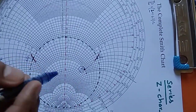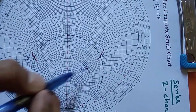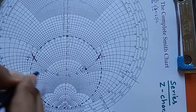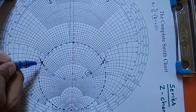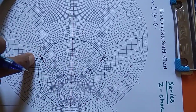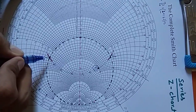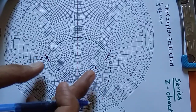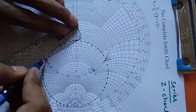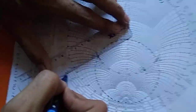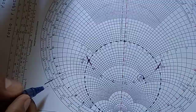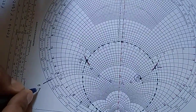Since we must always move towards the generator, we cannot go to the upper side — we have to move downward. When we move along this line and reach the intersection point, it means the real part of the load is matched to the real value of the characteristic impedance. Our real part is matched, and whatever reactance part is available there we have to cancel out. To find the distance, we use the scale and extend a line from center to the D2 point out to the outer circle, reading a value between 0.32 and 0.33, approximately 0.328 lambda.